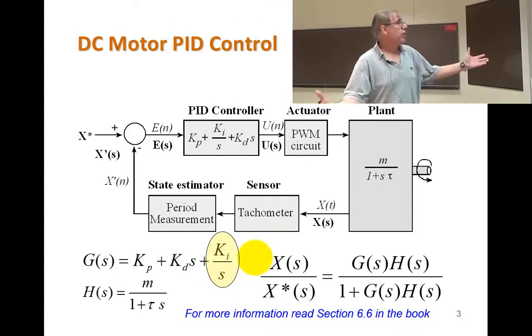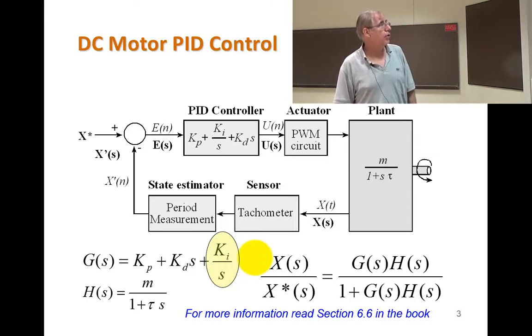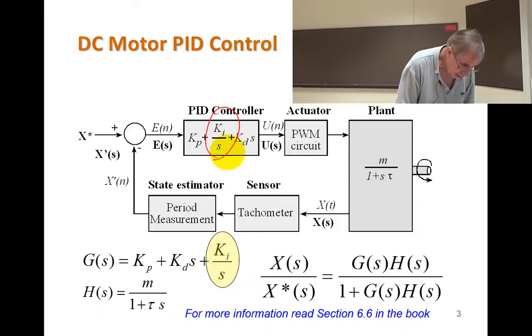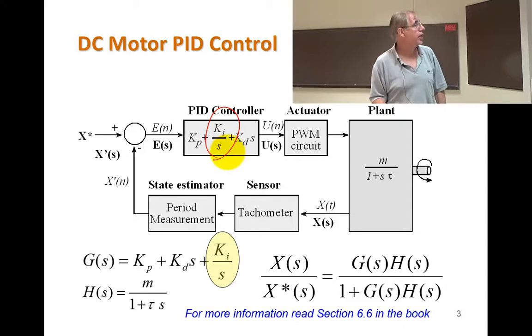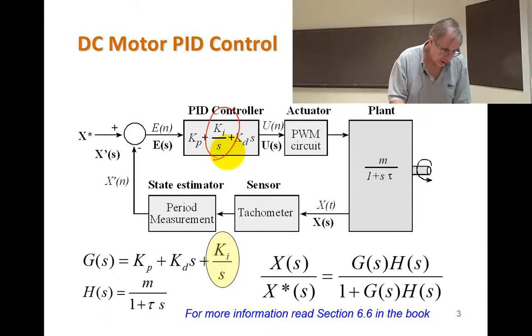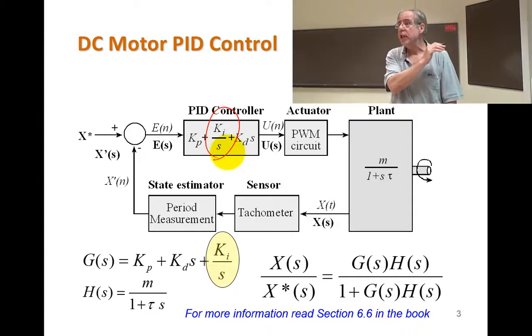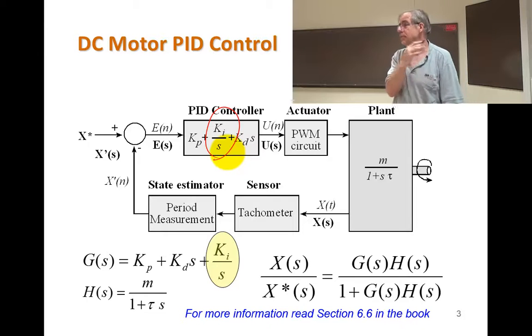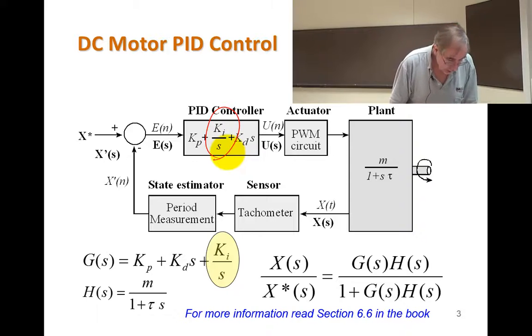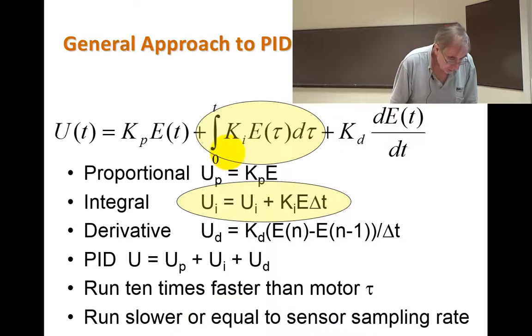So here's our loop again. And now we're going to do just the integral part. Just the integral part. So we're just going to have the integral part. And then we've got one variable. We've just got one number we've got to pick. And get the sign right. Remember that? Get the sign right.